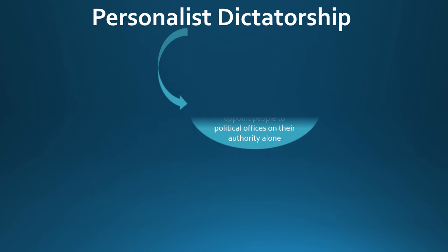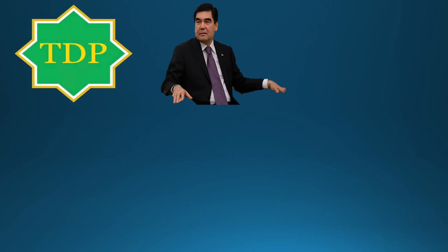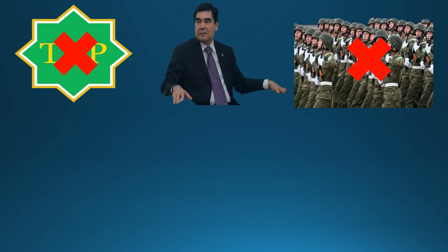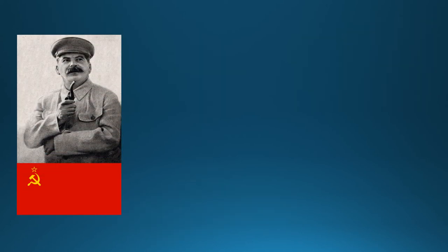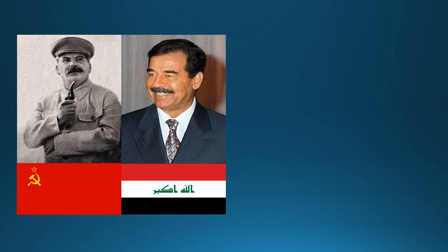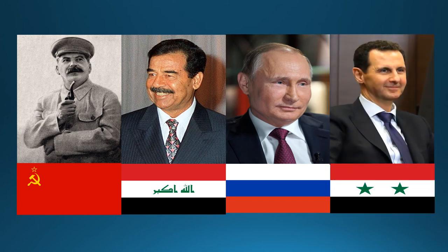A personalist dictatorship is a form of dictatorship in which one person — the dictator — holds absolute power and can appoint people to political offices on their authority alone. Neither political parties nor the military have any power independent of the dictator, who personally selects the important members of their government. Dictators in personalist dictatorships generally try to form a cult of personality around themselves. Historical examples are the Soviet Union under Joseph Stalin and Iraq under Saddam Hussein; present-day examples are Russia under Vladimir Putin and Syria under Bashar al-Assad.